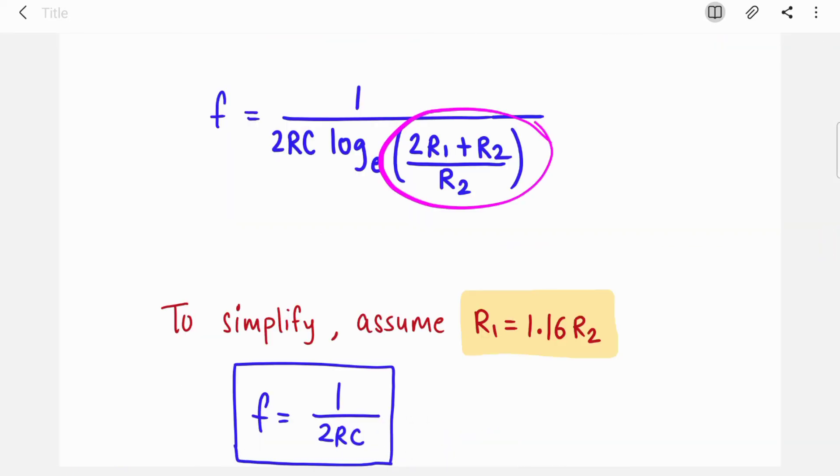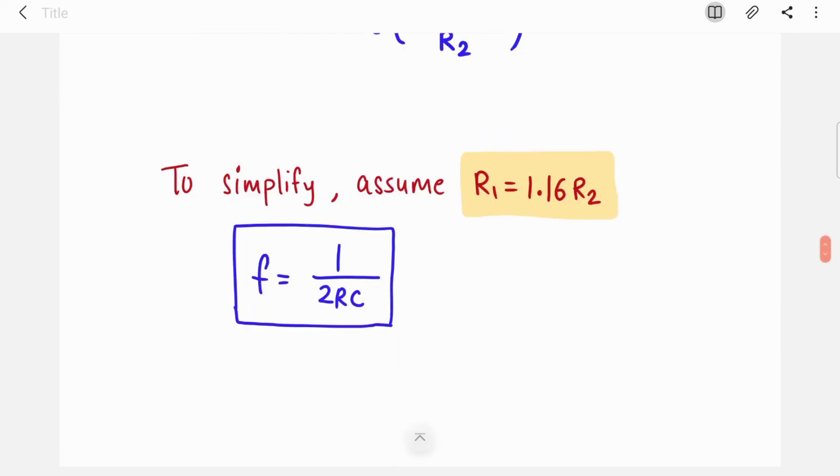We just replaced this bracket with the R1 R2 combination and we got our frequency of oscillations. This is the frequency with which your astable multivibrator is producing a square wave. This is a little bit bulky equation, so you can simplify it by assuming R1 equals 1.16 times R2. With this assumption, your frequency will be 1 upon 2RC. So we derived the frequency of oscillations, it was very easy.